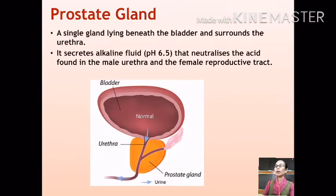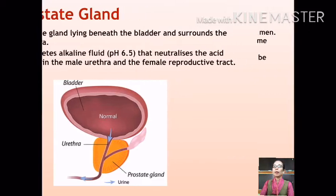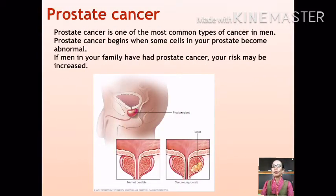About 30 percent of semen constitutes the prostatic fluid. A single prostate gland lies below the urinary bladder and surrounds the urethra. The prostate gland secretes an alkaline fluid that neutralizes the acid found in the male urethra and in the female reproductive tract. In some individuals, the prostate tends to grow larger as the male gets older, and prostate cancer is one of the most common types of cancer in men. A small percentage of prostate cancer also runs in families.